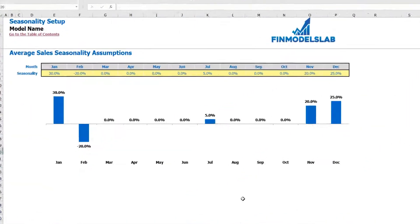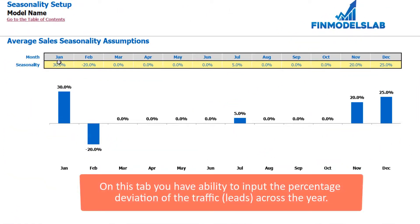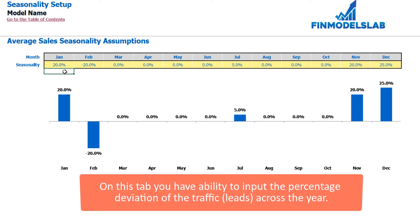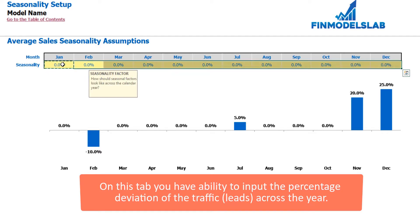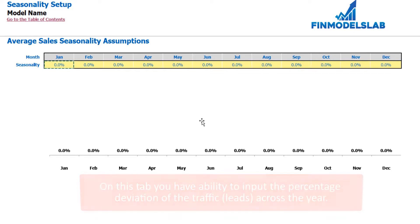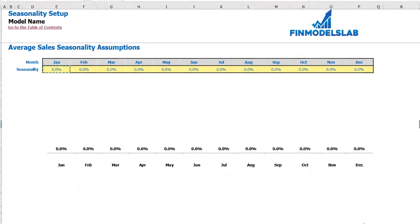You are also able to set up the seasonality of your sales. For example, if in January you have 20% seasonality, this means your average annual sale will be impacted by 120%. If in February it will be minus 10%, then you will multiply your average monthly sale across the year by 90%. If you don't need any seasonality, you can just zero out this set of assumptions.